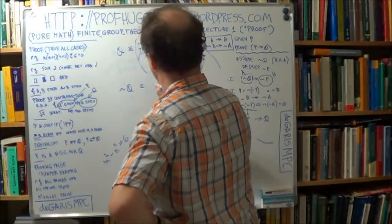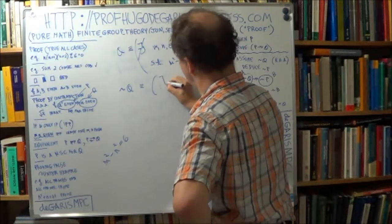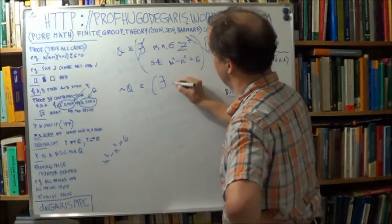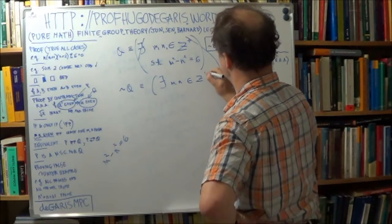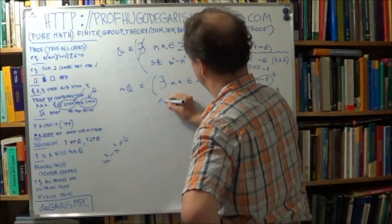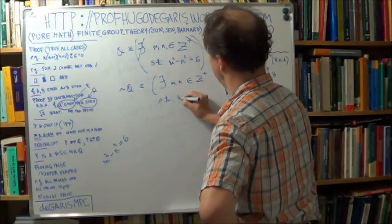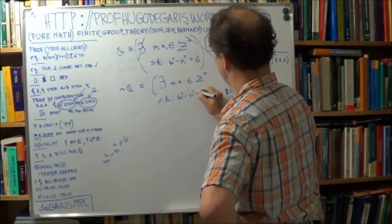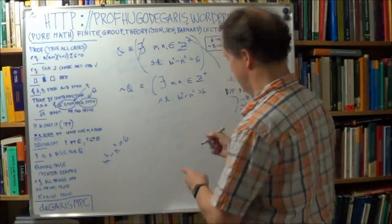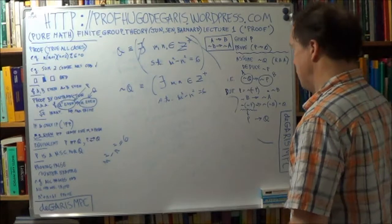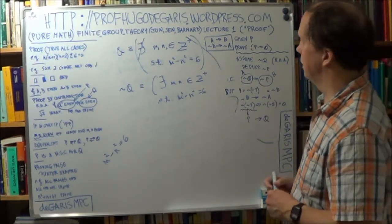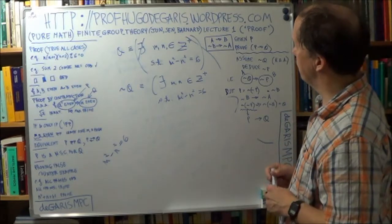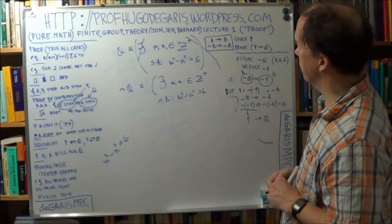Let's assume not Q, so that means there is, or there are, m and n belonging to the positive integers such that m squared minus n squared equals 6. How can we get a contradiction?